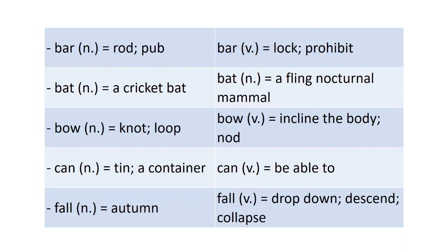More homograph examples: 'bar,' 'bat' — a crooked bat or a nocturnal flying mammal. 'Bow' as a noun is pronounced 'bow'; as a verb, 'bow.' 'Can' can be a verb meaning to be able to, or a noun meaning a container. 'Fall' as a noun means autumn; as a verb, it means to drop down or collapse.